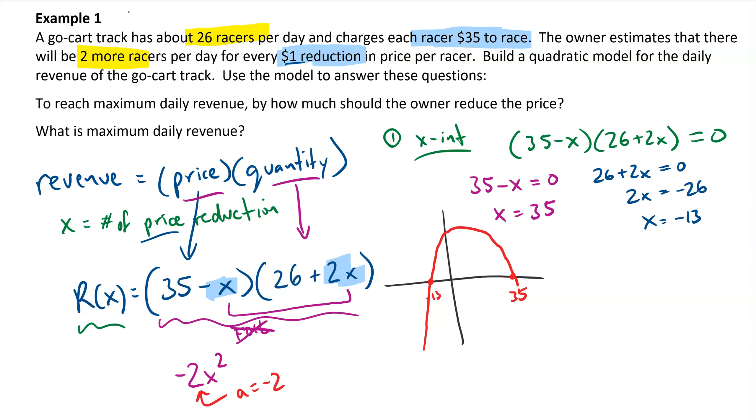Well, that's good, because this question is asking me about maximum daily revenue. So I know I am going to get a maximum. That maximum is going to happen at the vertex, and the vertex happens on the line of symmetry. So my next step, my second step, is going to be to find the line of symmetry.